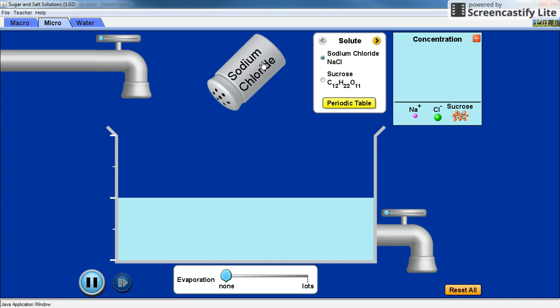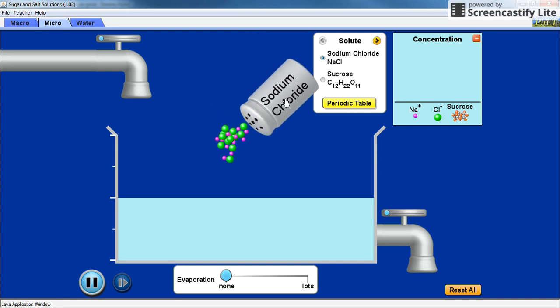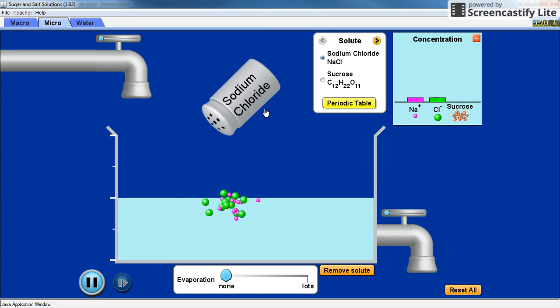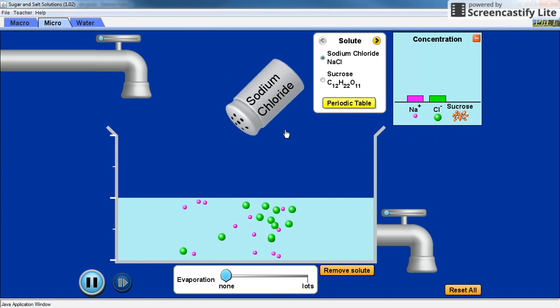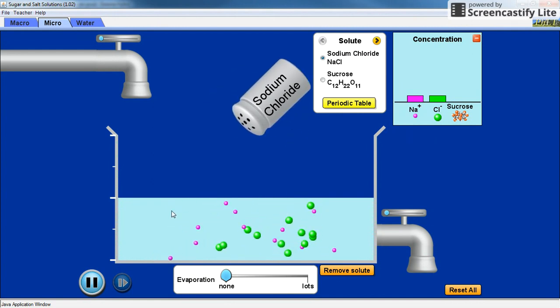Notice as we add the sodium chloride, it's fairly ordered, those chunks of sodium chloride. But when it goes into solution, the sodium chloride breaks up into the chloride ions, the green chloride ions, and the sodium ions.